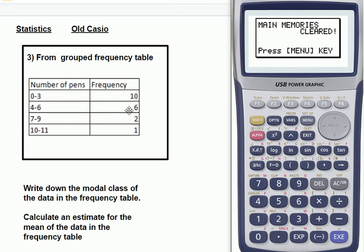A frequency table means that you have frequencies, as in the how many. Grouped means that you have groups, so this is not a specific number of pens, it's within a range.